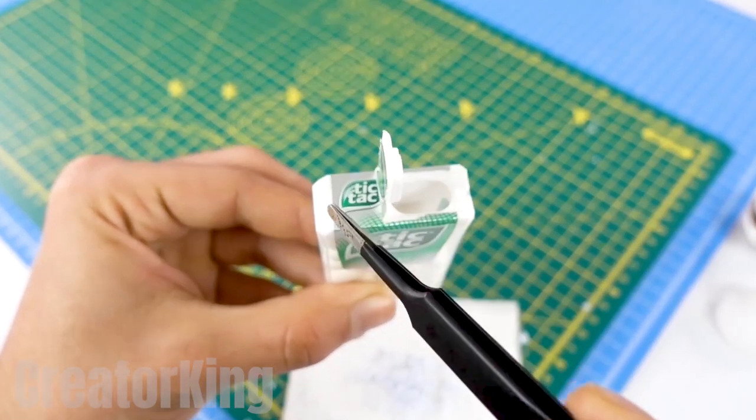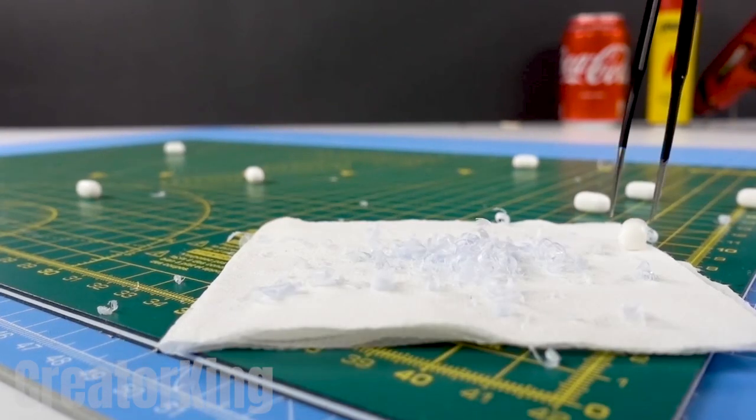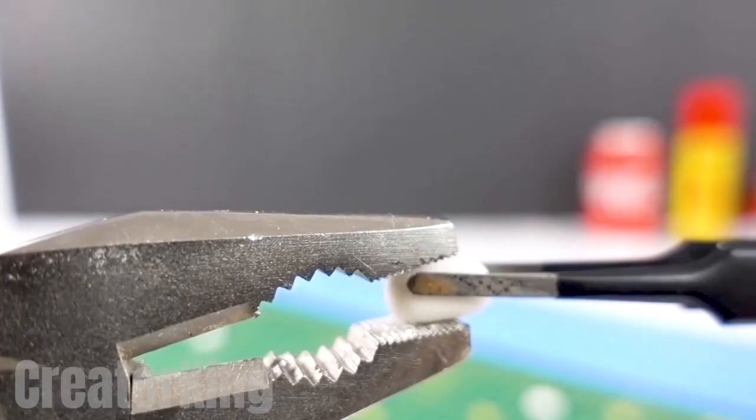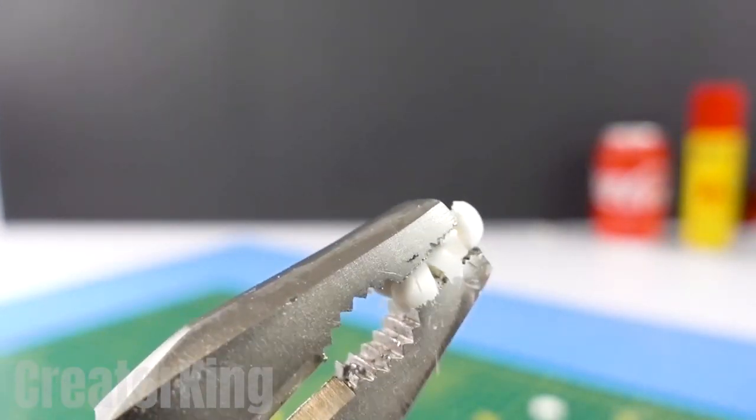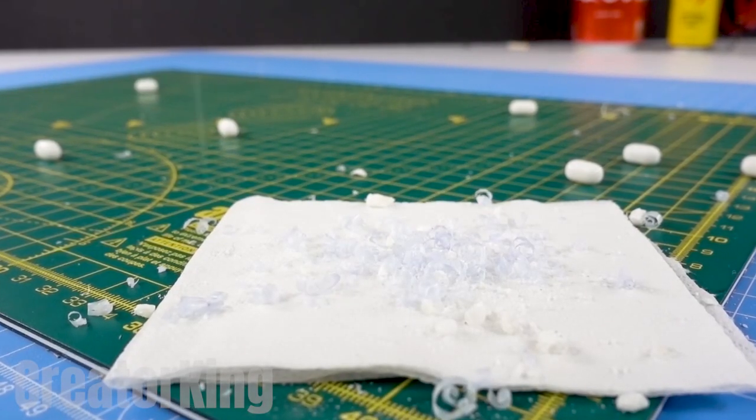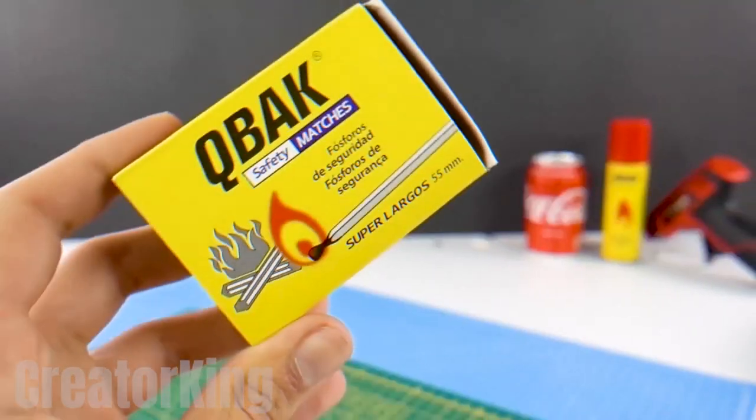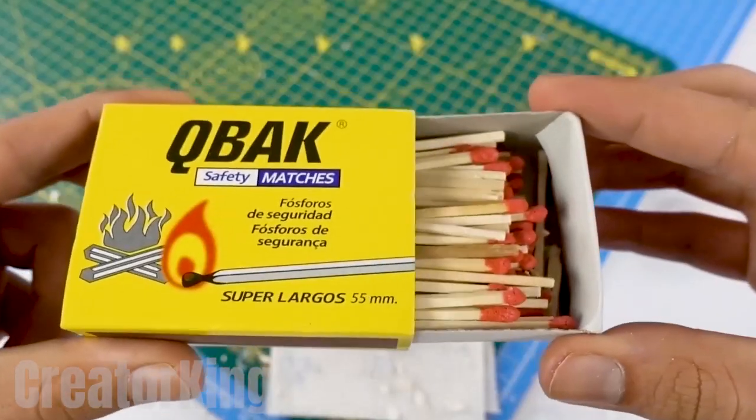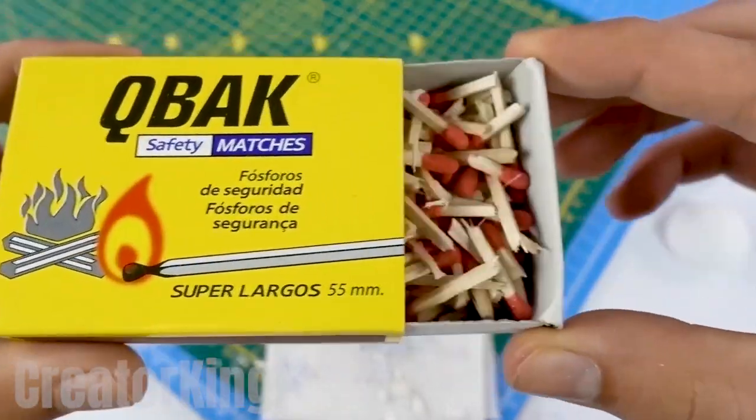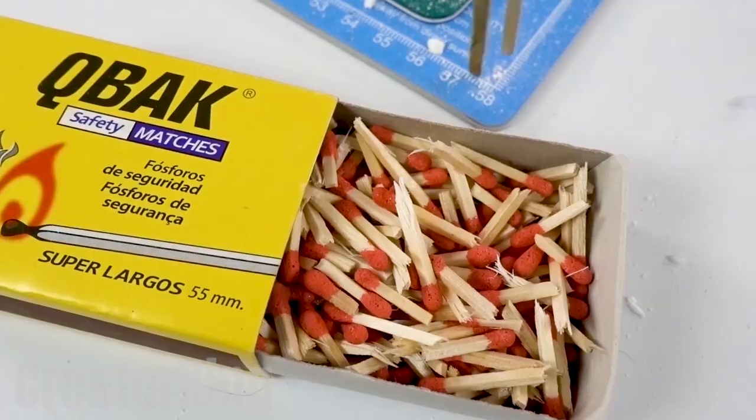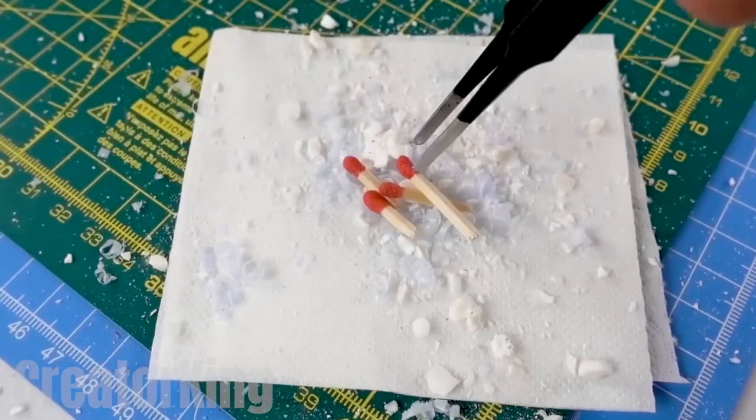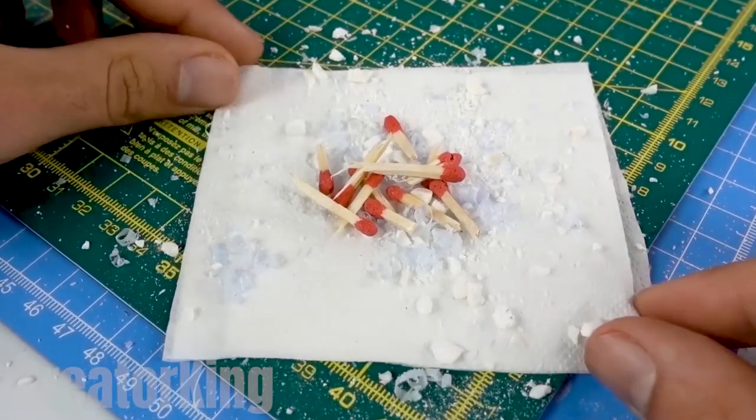You guessed it! For the next step, we'll need some mints of your choice. I'll use Tic Tacs. These must be crushed using a hammer, pliers, or any heavy and hard object. Add the last ingredient to the pile and close the napkin, creating a kind of bun.